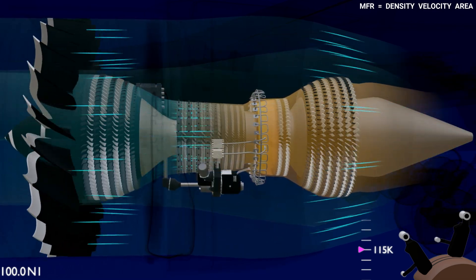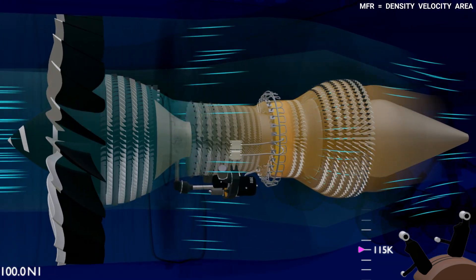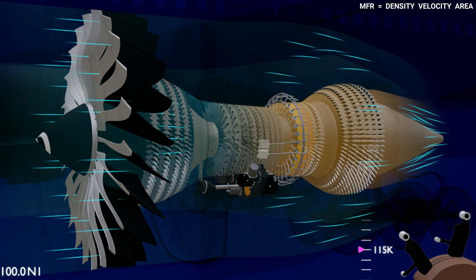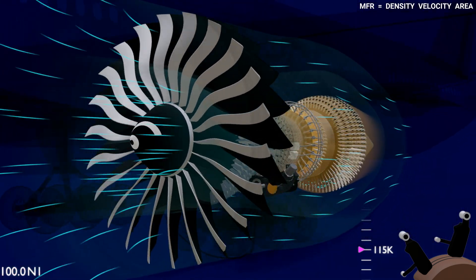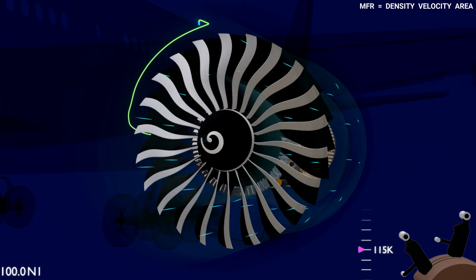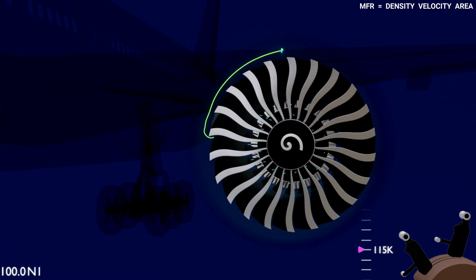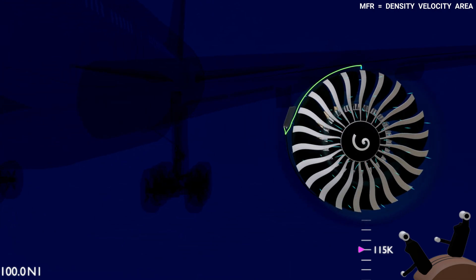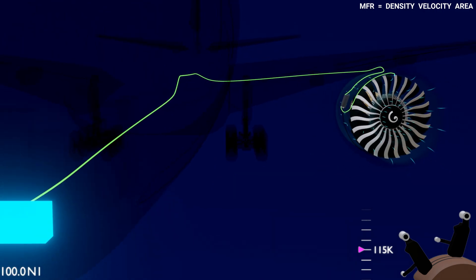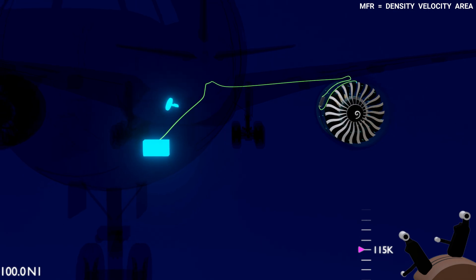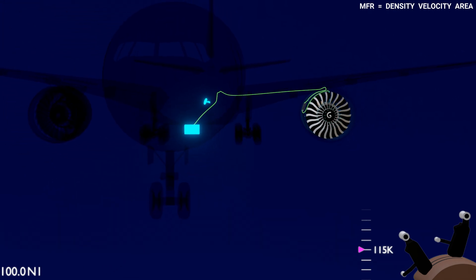The EEC sets the engine N1 speed depending on the outside air temperature. There are two sources of outside air temperature data to the EEC: the air temperature probe on the inlet cowl of the engine, and the air data inertial reference unit computer, which calculate outside air temperature data using the temperature probe of the aircraft.